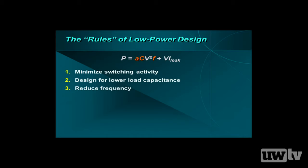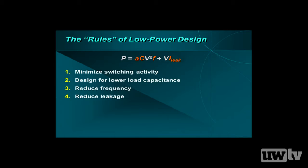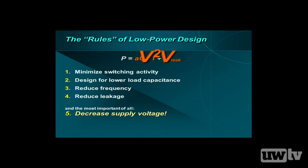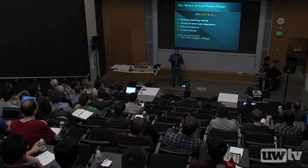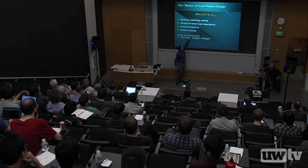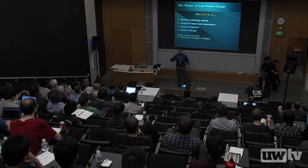F is frequency — the faster we compute, the more energy we consume because we're doing more work in a fixed amount of time, so we can reduce frequency to reduce power. The most important term though is voltage, because of the square term: if I can lower voltage, I reduce power quadratically. If I cut voltage in half, I use one quarter of the resulting dynamic power. When you look at low-power design, people are always looking for ways to reduce voltage.